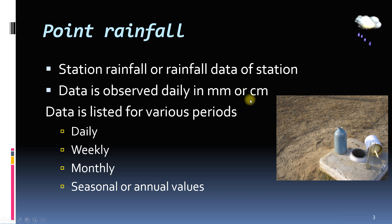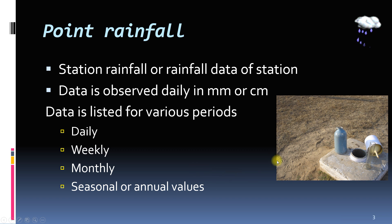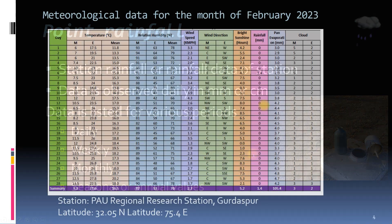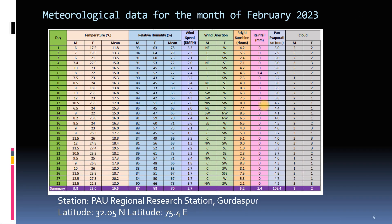The observed daily data is listed for various periods: daily, weekly, monthly, seasonal, and annual. You can get daily rainfall data from the Indian Meteorological Department in Pune or from the rain gauges of state agricultural departments in India. This is what daily meteorological data looks like for one station.